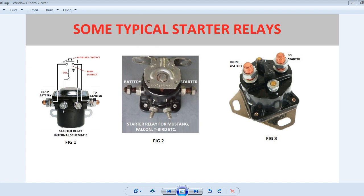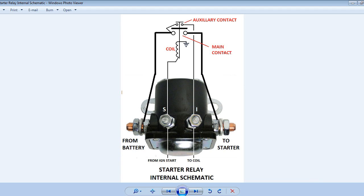Let me start off explaining the internal operation of the starter relay. There are two sets of contacts in the starter relay. There is the main contact which energizes the starter motor, and there is an auxiliary contact which is used to provide a full 12 volts to the ignition coil for starting the engine.